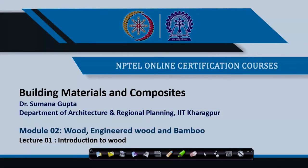Welcome again to module 2. This module covers another naturally occurring material - wood. You all know wood, what it is; we get it from trees. Along with it, we also see engineered wood and bamboo.